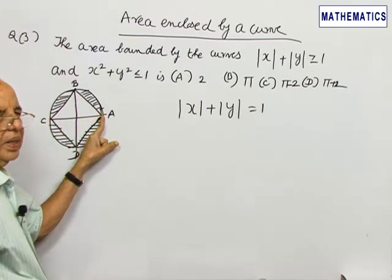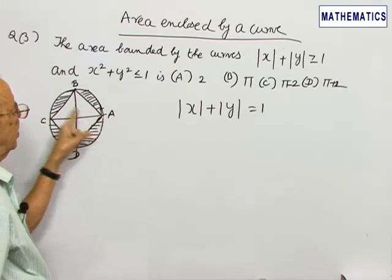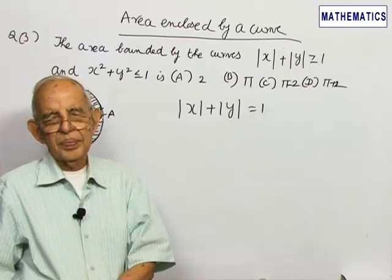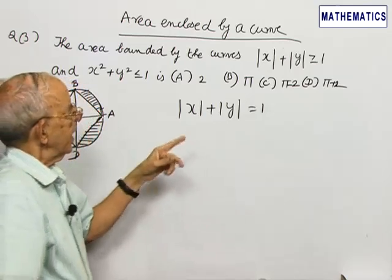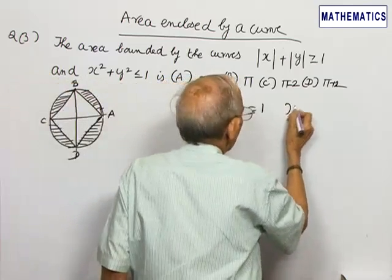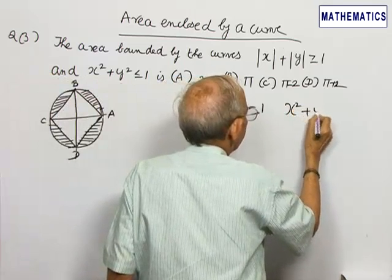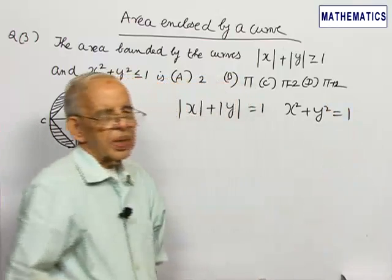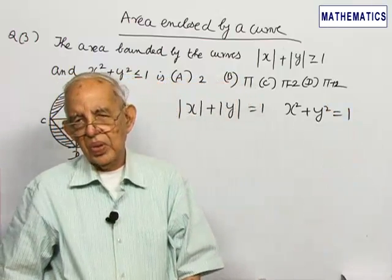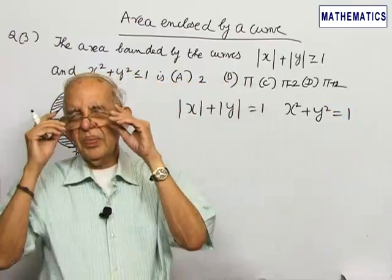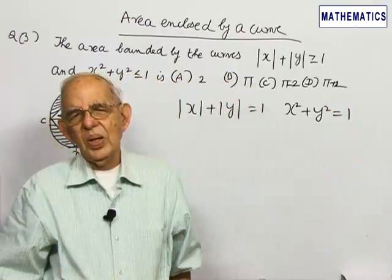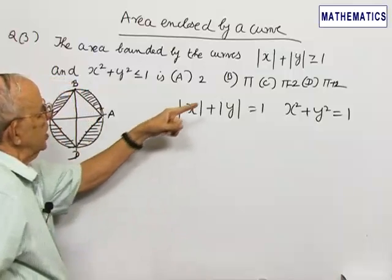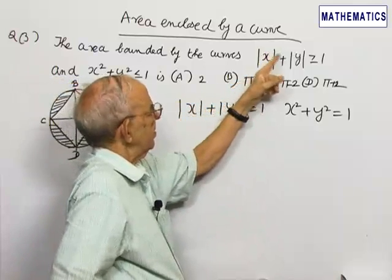It will form a square ABCD. x² + y² = 1 is a circle with center at the origin and radius equal to 1.